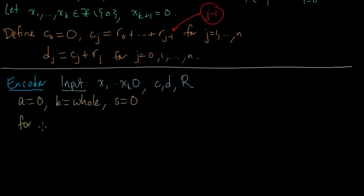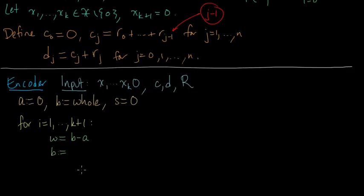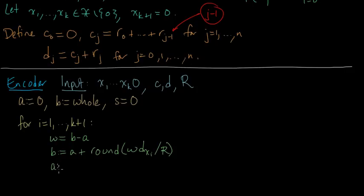Similarly to before, we're going to have this for loop as i goes from 1 up to k plus 1, looping over the input symbols. In each iteration of this for loop, we'll set W to be the difference of B and A. And then we're going to update A and B: B becomes A plus round(W * D[x_i] / R), and A becomes A plus round(W * C[x_i] / R).